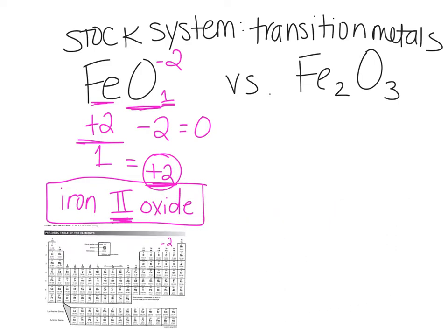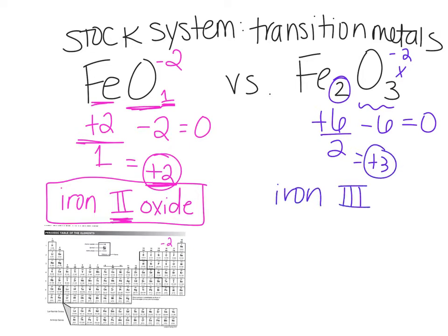Fe2O3. So here, again, we're going to look at our oxygen. He has a negative two charge. Negative two times this three, or negative two times three oxygens total is a negative six. In order to balance it out to equal zero, this has to be a plus six. But we have to respect the fact that there's two irons that that gets distributed between. So we're going to divide it by two to get us a plus three charge overall. So this is actually iron three oxide.